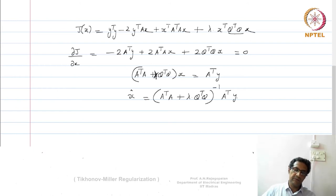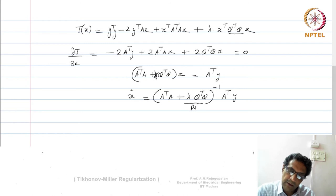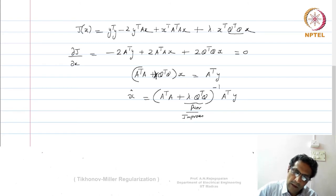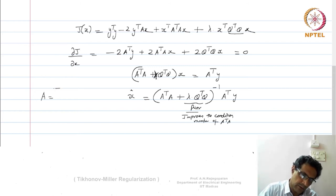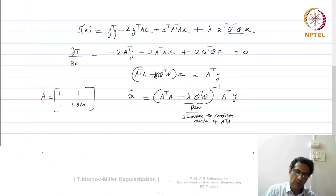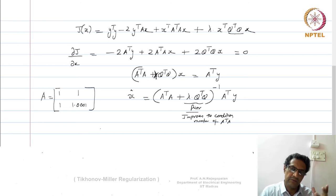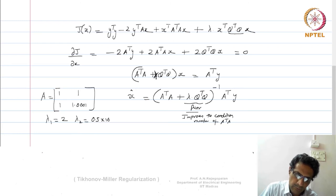If you compare this solution with the least squares solution, which was (AᵀA)⁻¹Aᵀy, now you have an additional term. This prior improves the condition number of AᵀA. Going back to that ill-conditioned example with A = [[1,1],[1,1.0001]], where λ₁ = 2 and λ₂ ≈ 0.5×10⁻⁴, you could add 0.01 to both eigenvalues: λ₁ becomes 2.01 and λ₂ becomes approximately 0.01, giving κ ≈ 201, drastically reducing the spread.